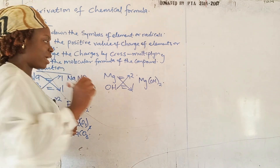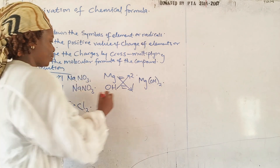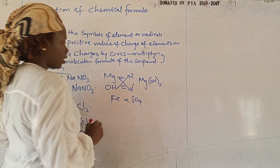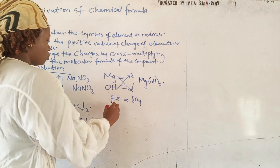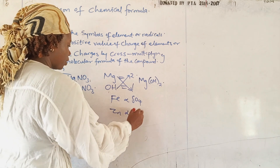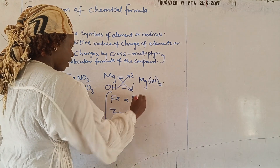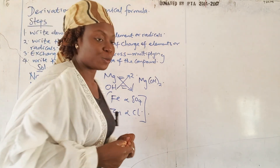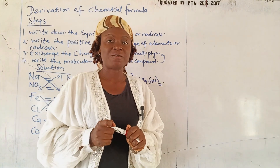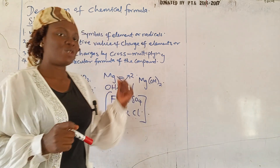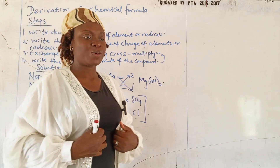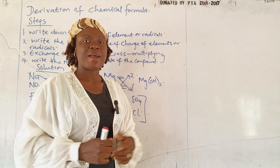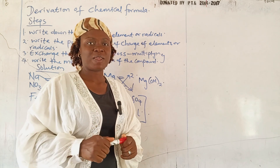We are going to have a class assignment now. You are going to write the formula for iron and sulfate for me, and also zinc and chlorine. Put your answers in the comment section of the school YouTube platform. We'll be going on to other topics when next we meet. Thank you, see you some other time.